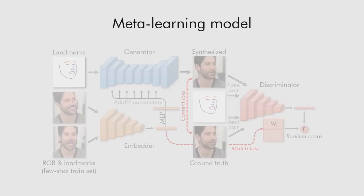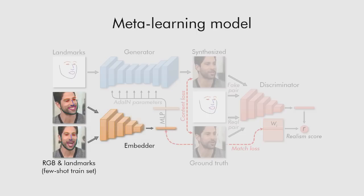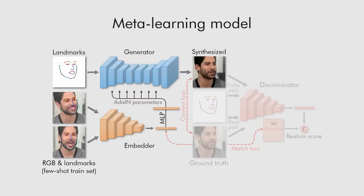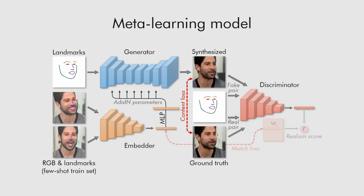Our approach uses a meta-learning stage which is performed on a huge dataset of videos. For the results in this presentation, the VoxCeleb2 dataset is used. Three networks are trained during the meta-learning stage. The embedder network maps frames concatenated with landmarks into vectors containing pose-independent information. These vectors are used to initialize the parameters of adapted layers inside the generator network, which maps landmarks into the synthesized video. Finally, the discriminator network assesses the realism, pose, and identity preservation of the generated frames.